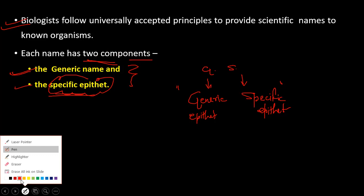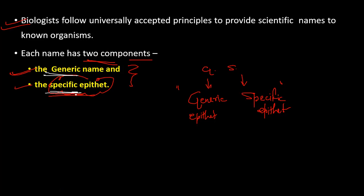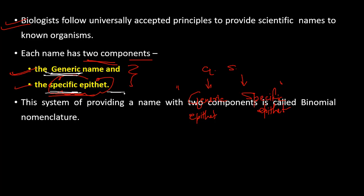The first component of a scientific name is the generic name (name of the genus), and the second is the specific epithet. One genus can contain many species — that's why the generic name is general. For example, Homo sapiens and Homo erectus both belong to genus Homo, but are different species.